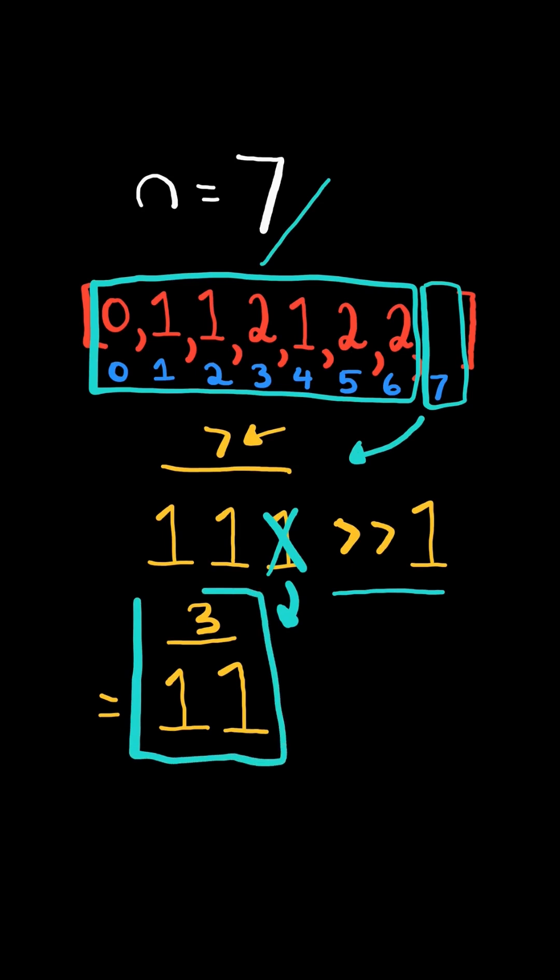So now we have the representation for 3, in which we already calculated the number of 1 bits. This is almost the answer we need for the number of 1 bits in 7. We just need to account for the bit that was removed.